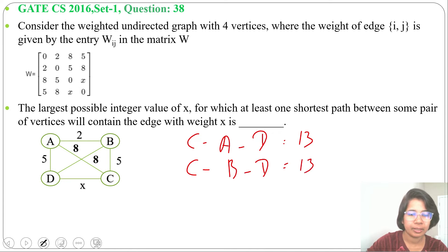So C to B, then B to A, A to D. C to B 5, B to A 2, then A to D 5. 5 plus 2 plus 5 is 12. So we are getting shortest path as 12.